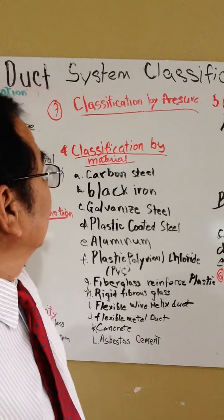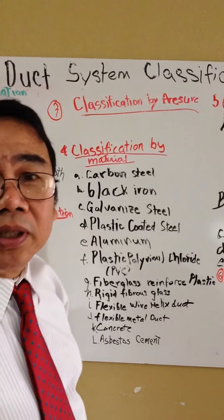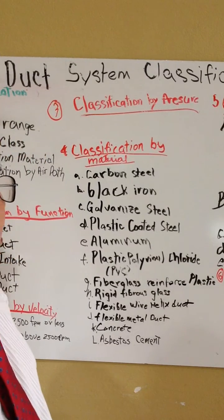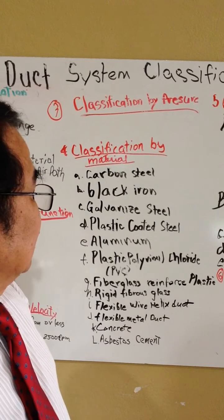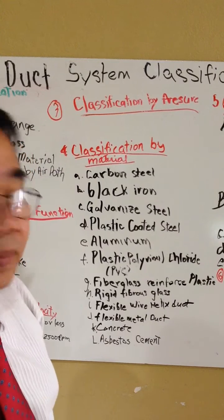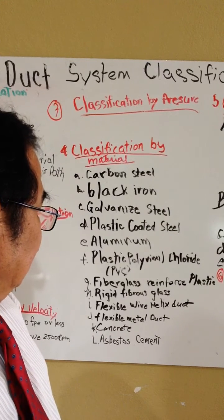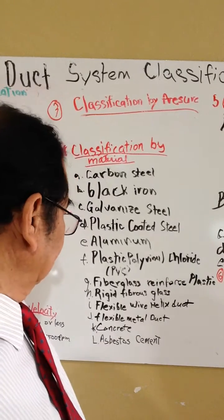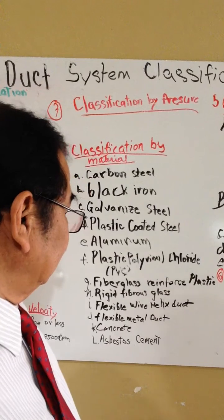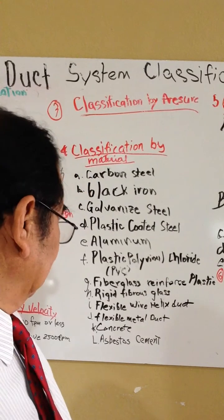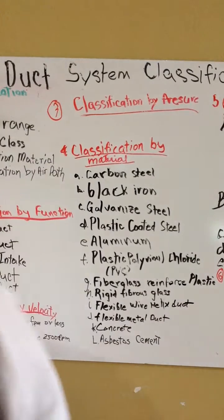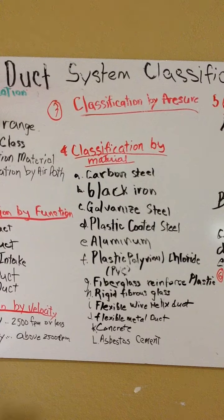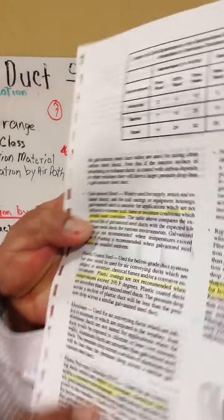Some of the materials used include carbon steel, black iron, galvanized steel, plastic-coated steel, aluminum, plastic, polyurethane, chloride PVC, fiberglass-reinforced plastic, rigid fiberglass, flexible wire flex duct, flexible metal duct, concrete duct, and asbestos cement duct. We have some pictures here to show you the ones being used.